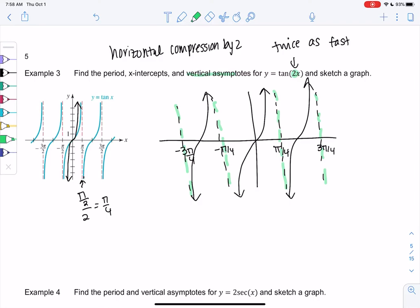We have intercepts. Zero would be an intercept. These are also happening twice as fast. This one was at π because that's halfway in between, so now this one's at π/2, negative π/2, and my guess is the next one would be 3π/2.